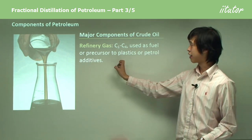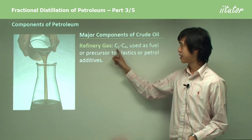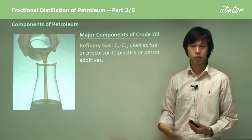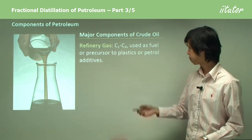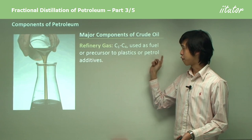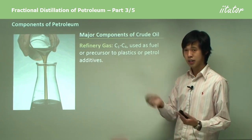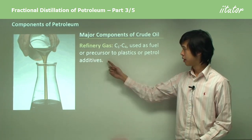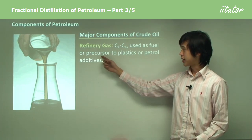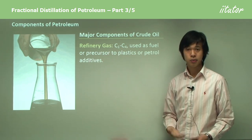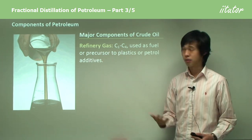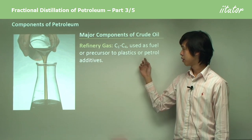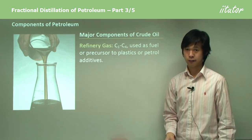So first is refinery gas. This is anywhere between C1, which is methane, to C4, which could be butane. It's used as a fuel — you can burn it. Or it can be a precursor to plastics, so we can use it to produce plastic. Or we can use it as a petrol additive.